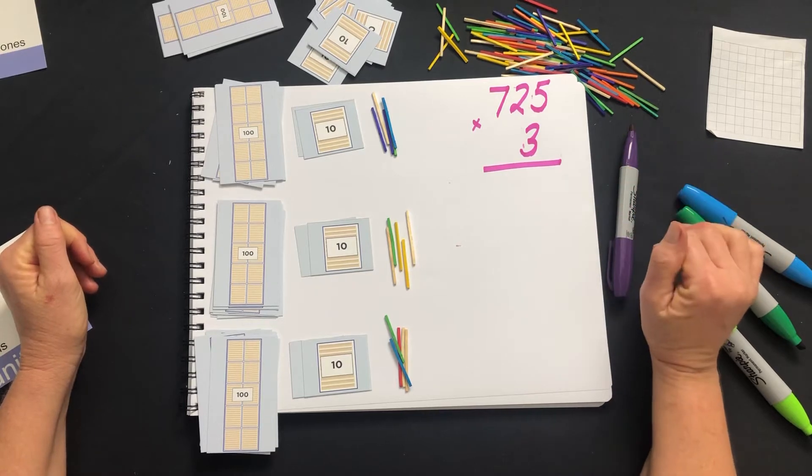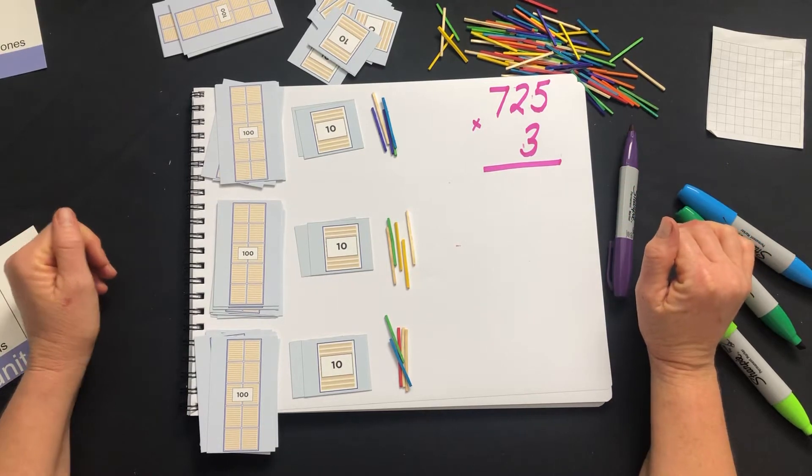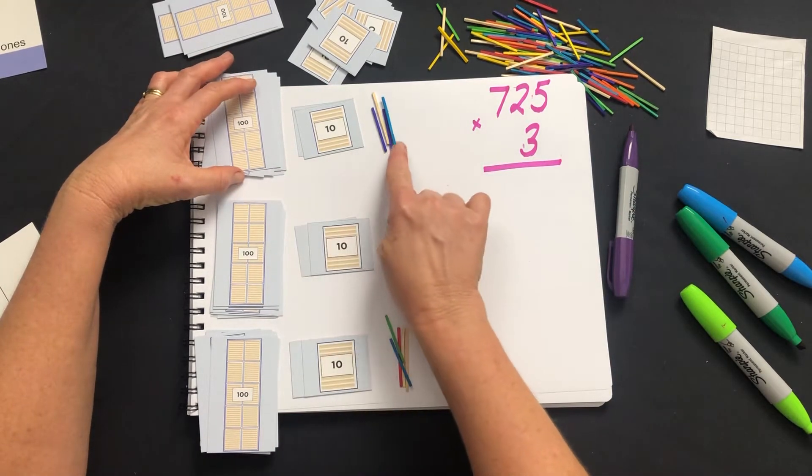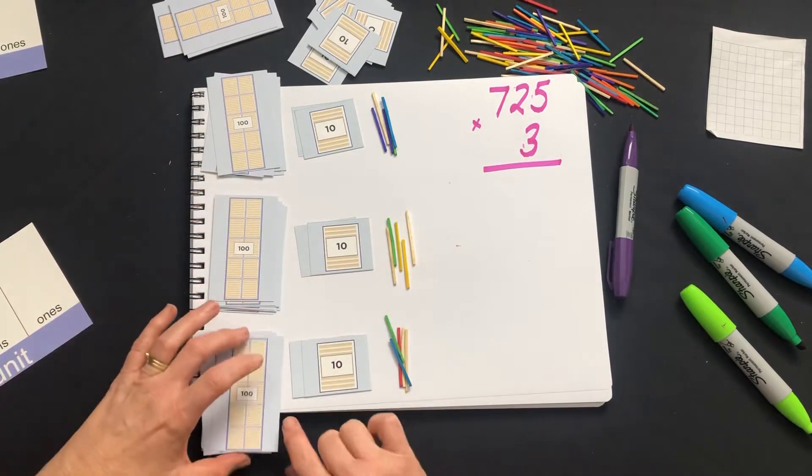Let's have a look at this problem: 725 times 3. So that means we have three groups of 725, which we've laid out here.